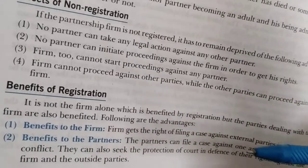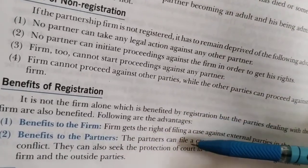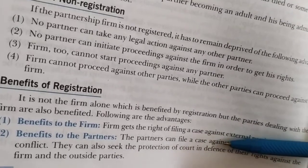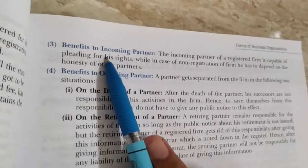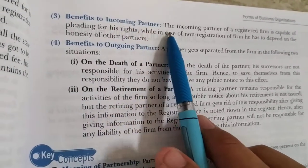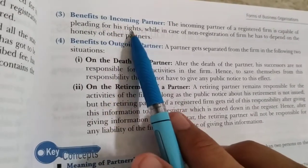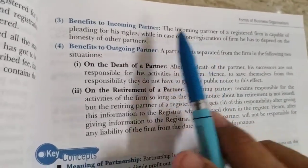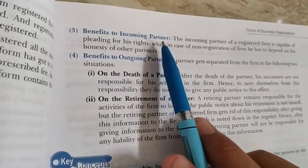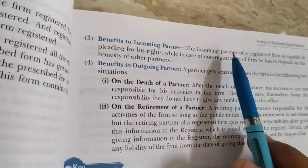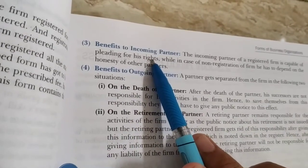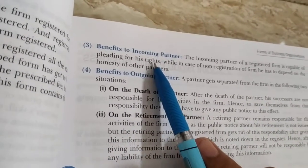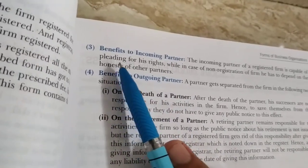Benefit to the partner: Partner भी एक दूसरे के against, जैसे तीन partner हों और एक partner अपना right लेने के लिए, बाकी partners के against case कर सकते हैं. Benefit to incoming partner: कोई partner admit हो रहा है और firm registered है, तो वो अपने right की pleading ले सकता है. Otherwise, अगर firm non-registered है, तो नए partner को बाकी partners की ईमानदारी पे ही depend रहना पड़ेगा.